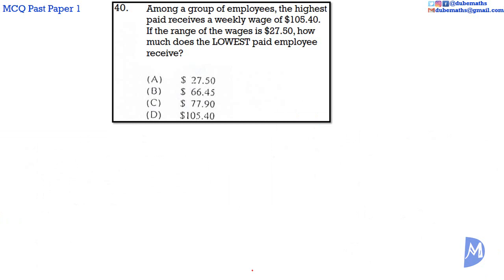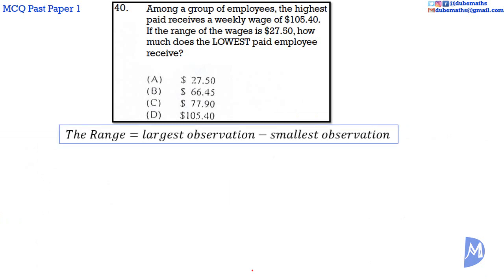The range is the difference between the largest and the smallest observation. The highest paid is given as $105.40. The range is given as $27.50.